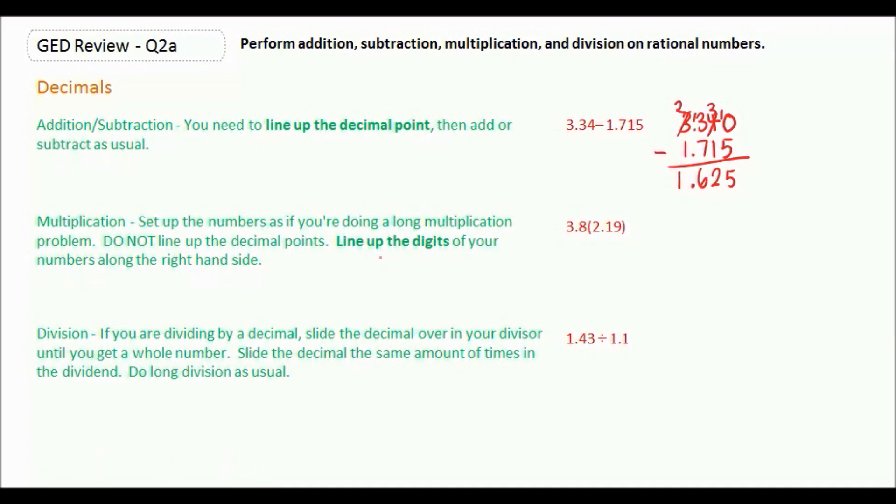So looking at 3.8 and 2.19, I see that this one has more digits. So I'm going to put that one on top. We don't want to put 3.8 here because that's going to make life a little bit harder for us. So we're going to line up the digits along the right. The digits line up.